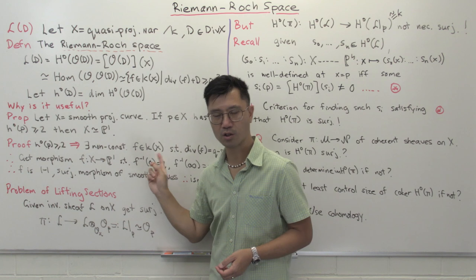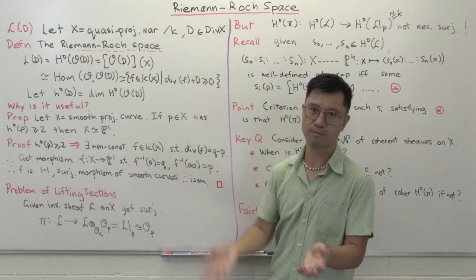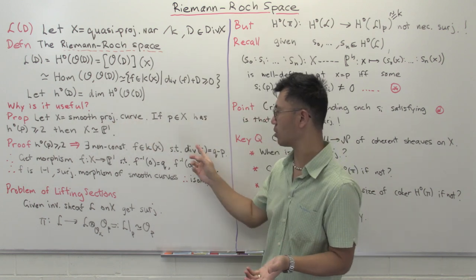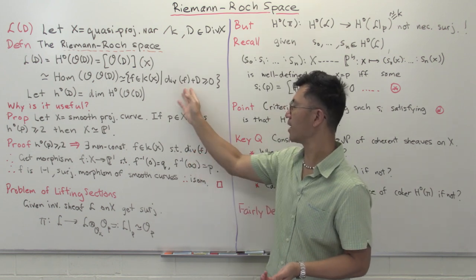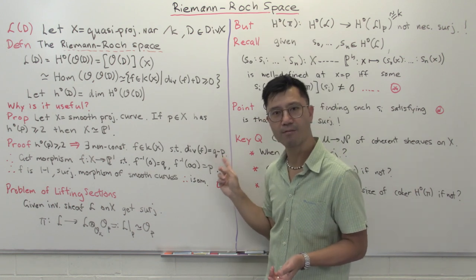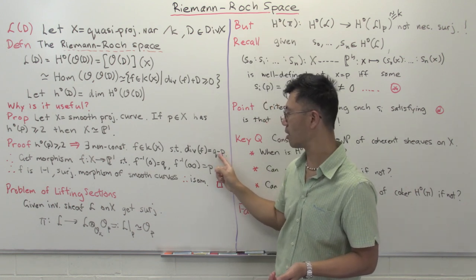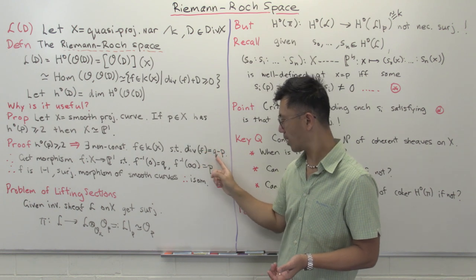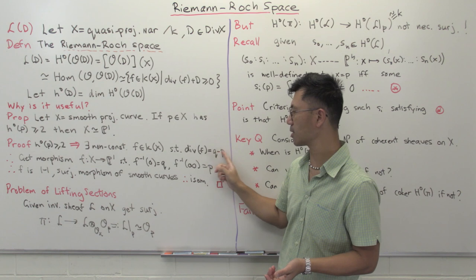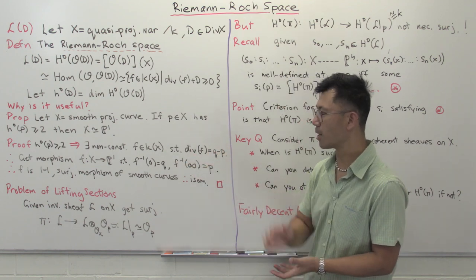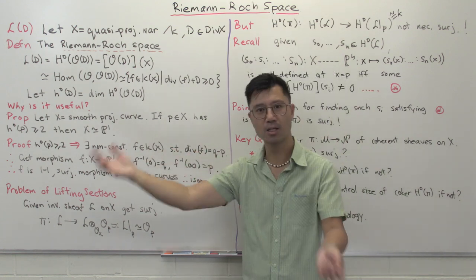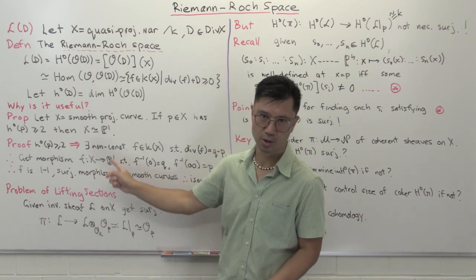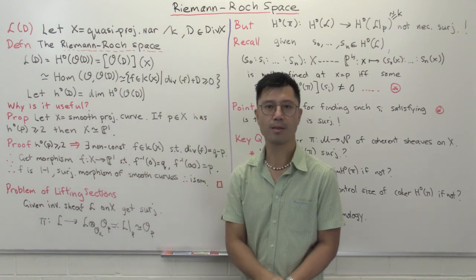F is a non-constant rational function, so being non-constant it's going to have a zero and a pole somewhere. Since we're talking about projective curves, it has to have a pole somewhere if it's non-constant. The divisor of F is inside L(P), so when you add P to it, it's ≥ 0, meaning the only pole it can have is a single pole at P. So div(F) = -P, and the degree of F has to be zero, so there can only be a single zero elsewhere. Let's call it Q, and Q ≠ P since F is non-constant. So div(F) = Q - P, and this is a rational function on X.